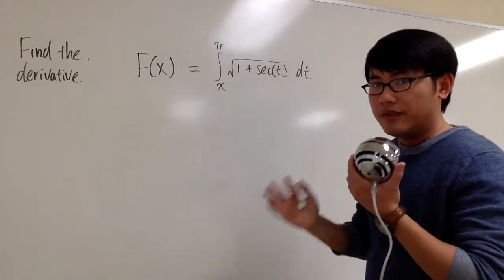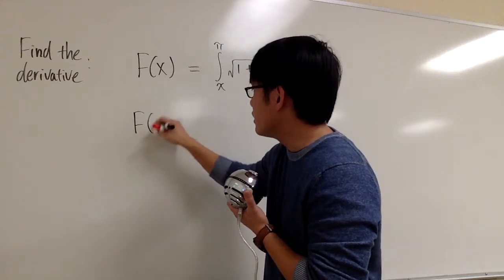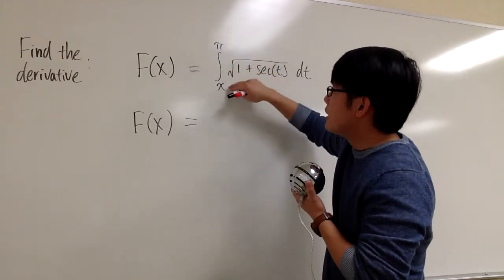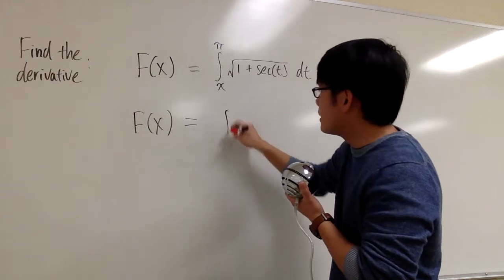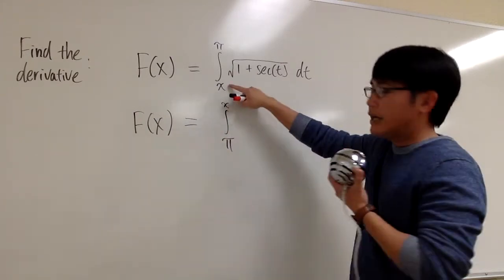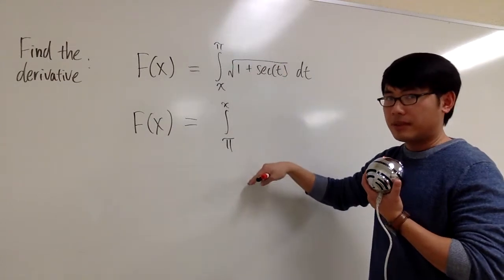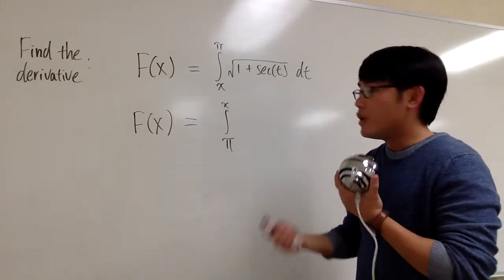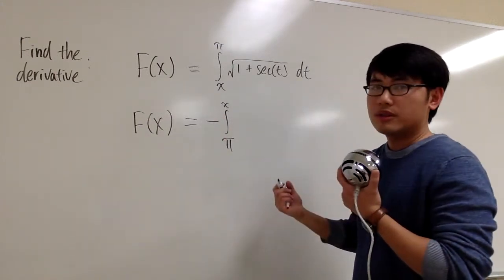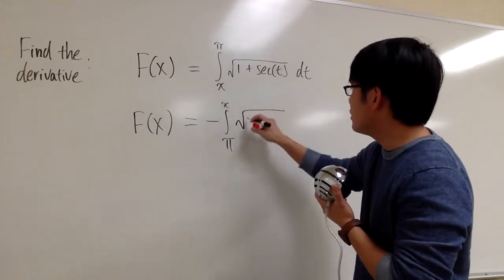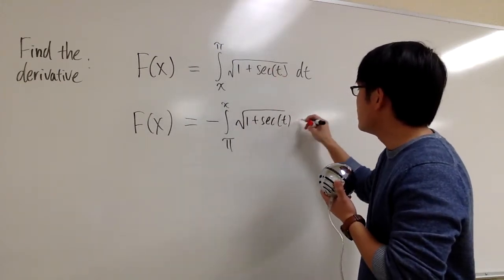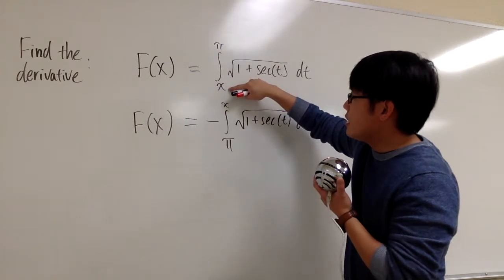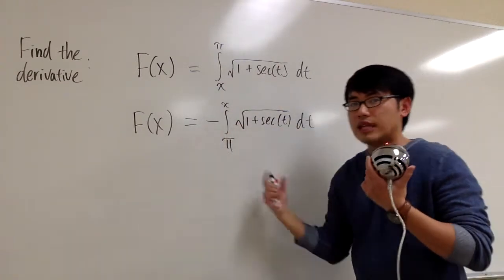So before I can use FTC1, I would like to use the property of integration. F of x, this right here, I would like to switch the limit, instead of going from x to π, I would like to go from π to x. I really have to have the x on the top rather than on the bottom. So I can switch that. But when you're trying to switch the limit of the integral, what you need to do is just negate the result. So let me just write this down right here: 1 plus secant t dt. Nothing else will change. When you switch the limits of integration, all you need to do is put the negative in front. You just have to negate the integral.